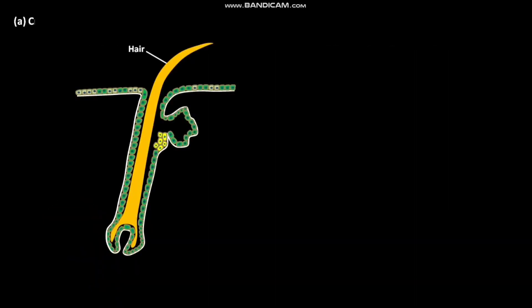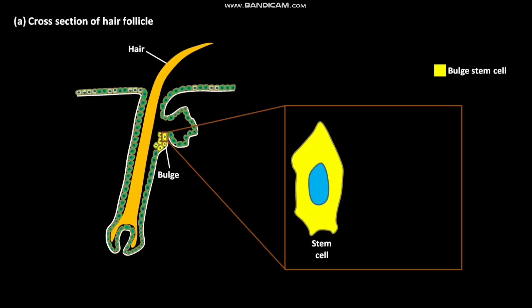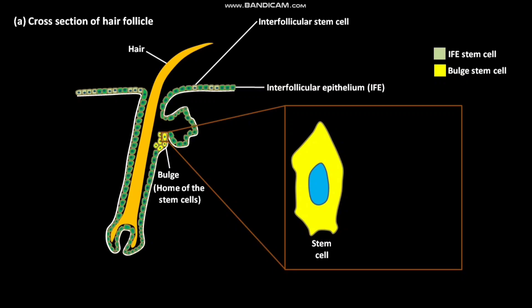This is a cross section of a hair follicle. The bulge in the hair follicle has stem cells, and the bulge is called the home of the stem cells. Outside the hair follicle, Interfollicular Epithelium or IFE is present. The Interfollicular stem cells present in IFE are present among the basal epithelial cells.